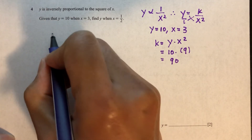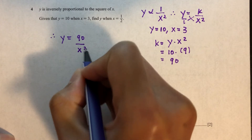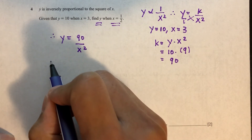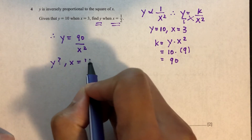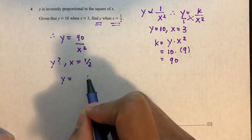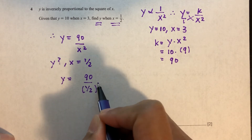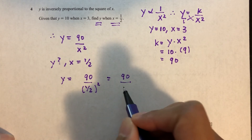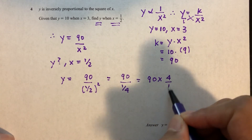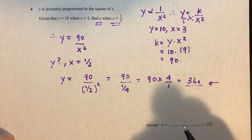The equation is y equals 90 over x squared. Now find y when x equals one half. Replacing x: y equals 90 divided by one half squared, which is 90 divided by 1 over 4. That equals 90 times 4, which is 360. That is your answer.